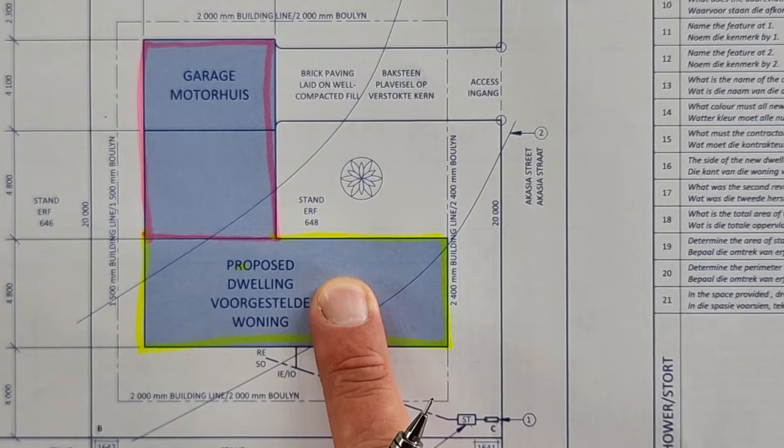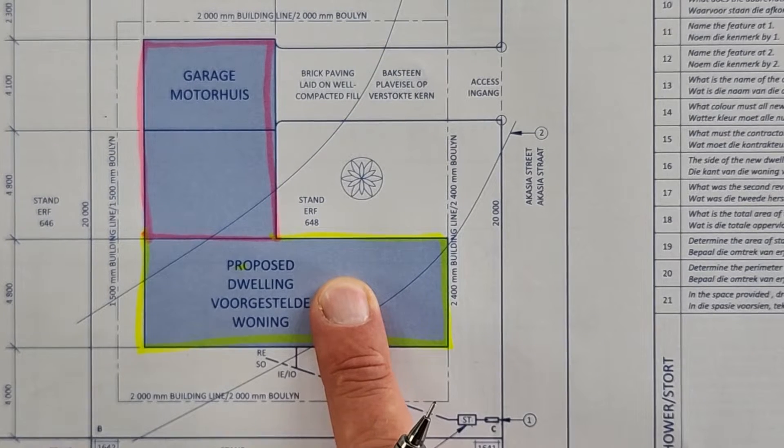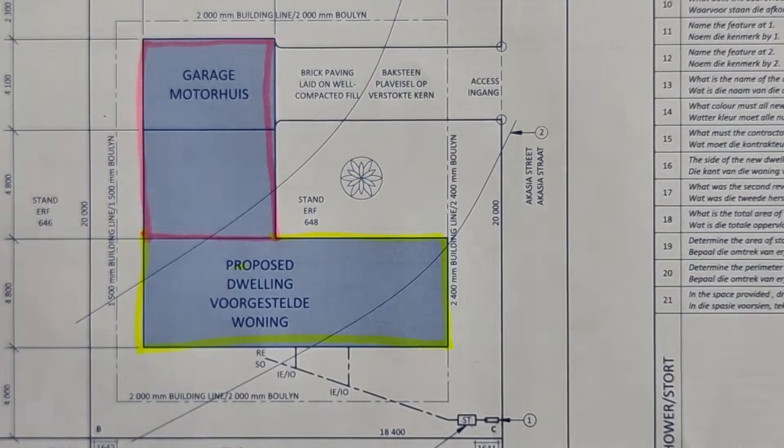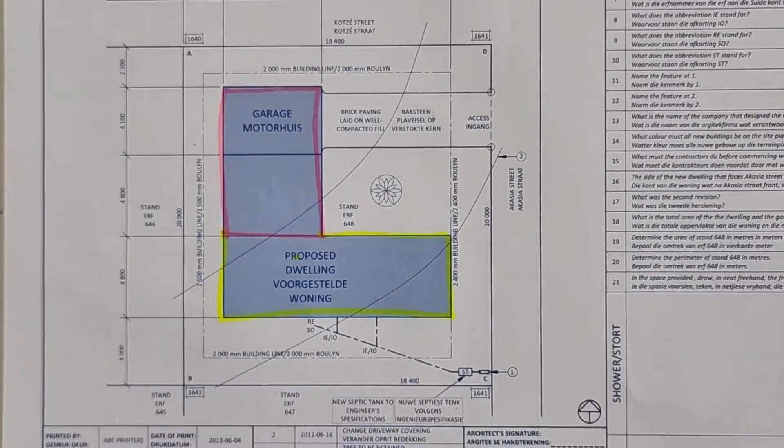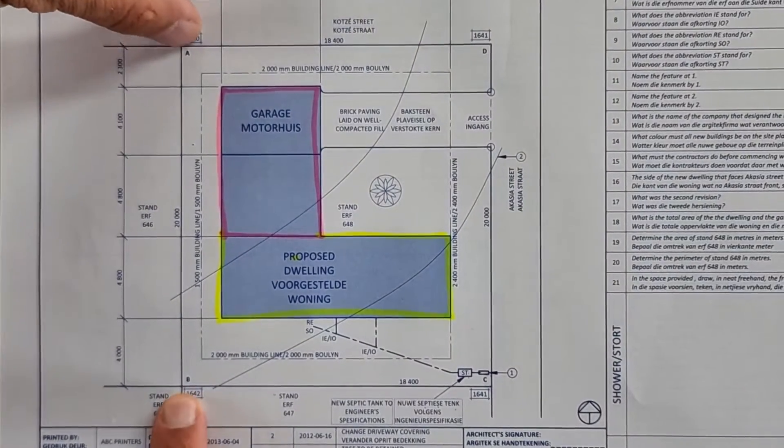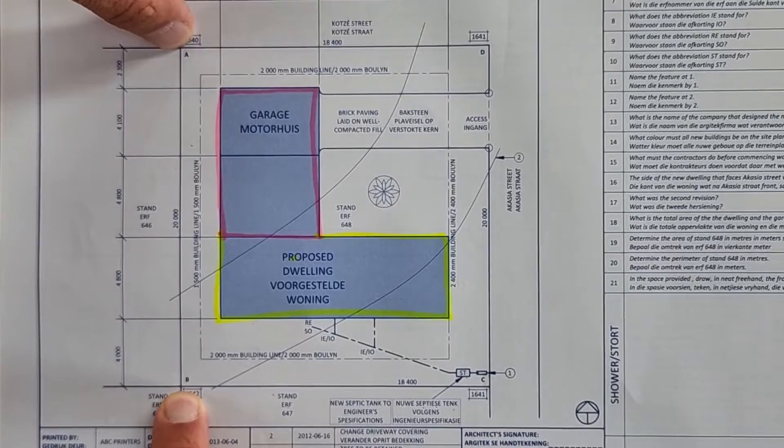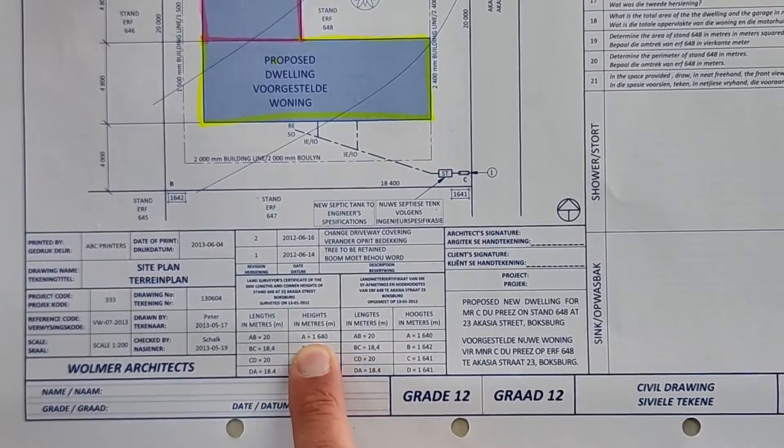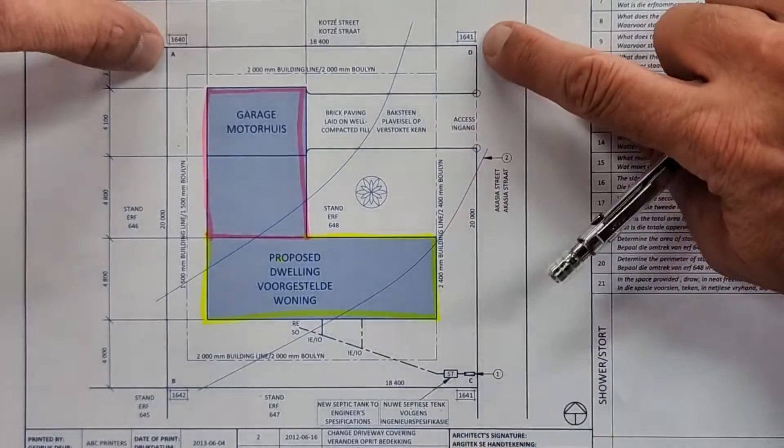Number 19, determine the area of stand 648 in meters square. So that is the entire site size that they are asking you. You are going to take the length of AB and you are going to take that measurement from your quantity surveying as well as the width of it, times that and get the full surface area here.